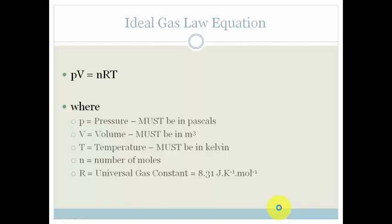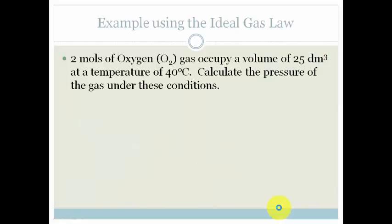Right, so let's look at a couple of examples and apply our knowledge to this equation to solve them. It says 2 moles of oxygen gas occupy a volume of 25 decimeters cubed at a temperature of 40 degrees Celsius. Calculate the pressure of the gas under these conditions. So the very first thing that we're going to do is write down our variables: P, V, N, R, T.